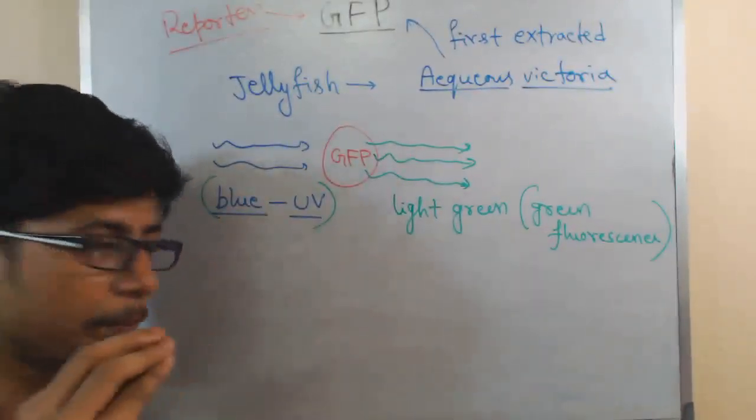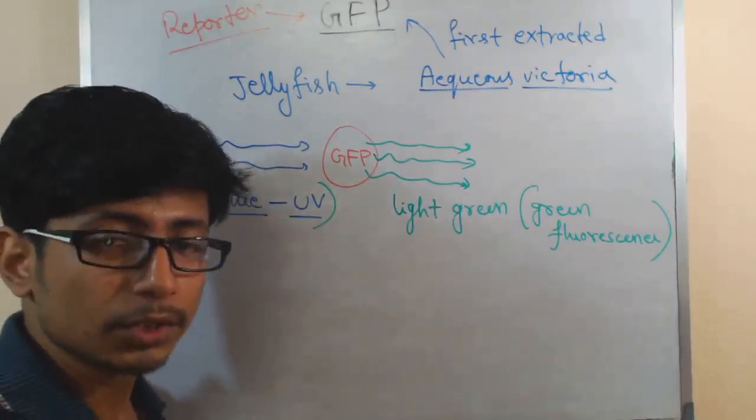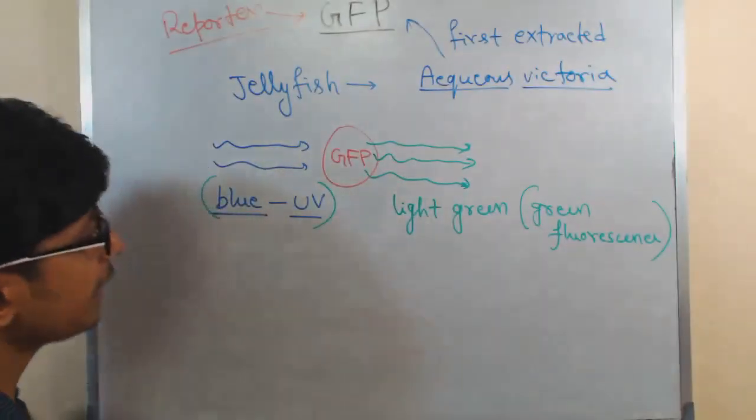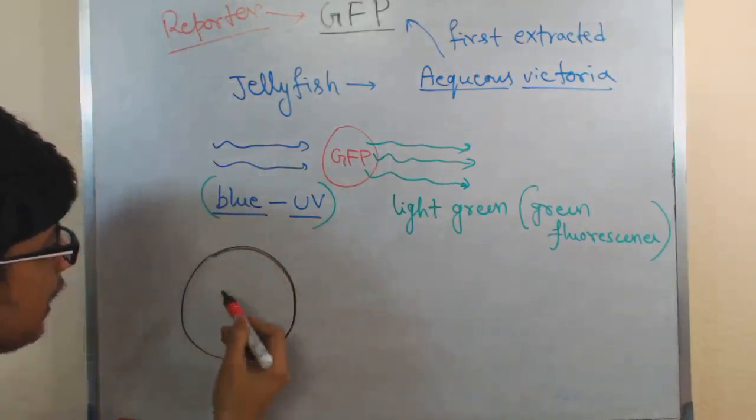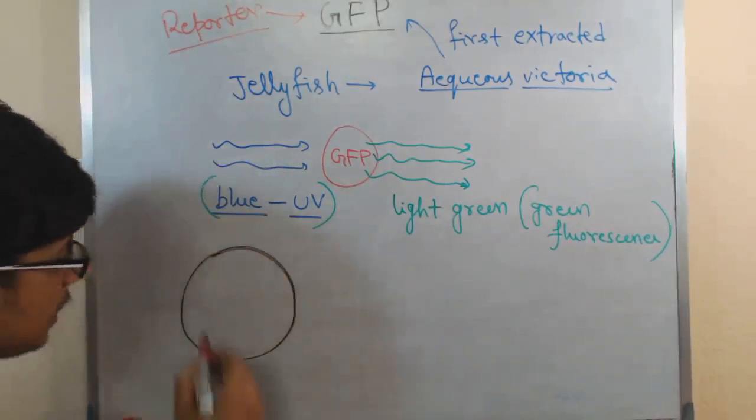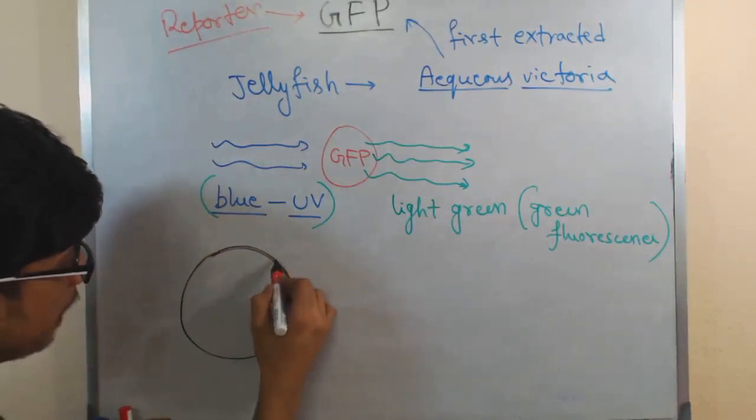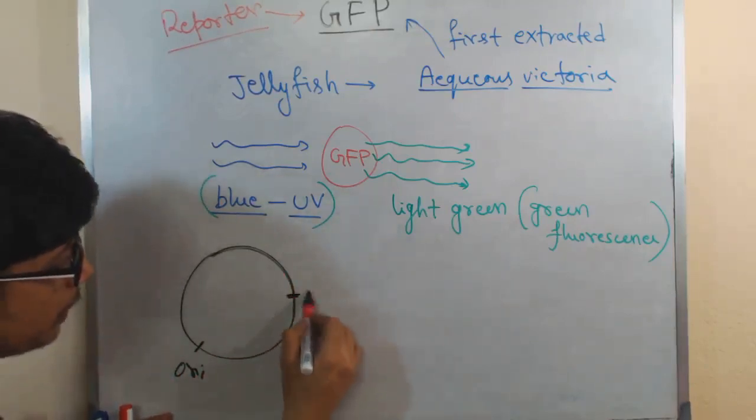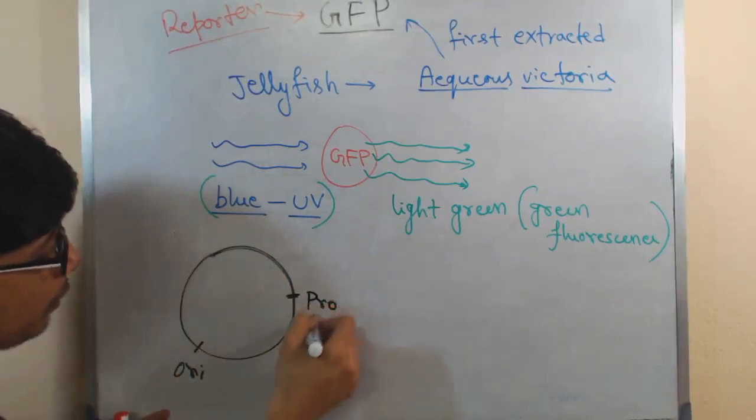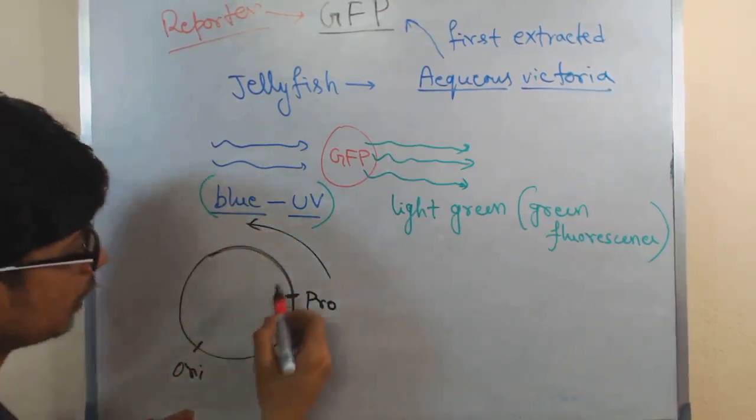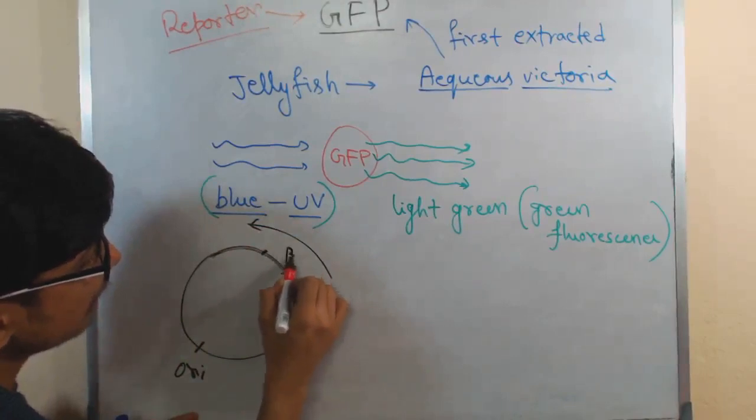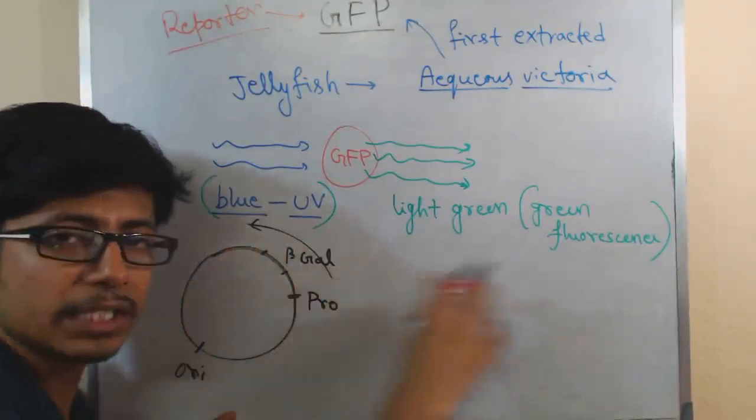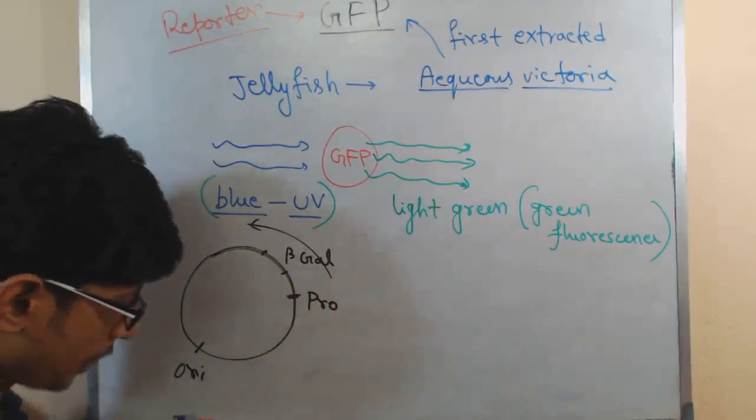Now, we can use this GFP protein or GFP gene. Let us say we are doing an experiment for checking the expression of a particular gene, and this is the plasmid we have. In this plasmid, we have an origin of replication here and we have a set of genes. We have the promoter over here and downstream of the promoter, we have our gene, let's say the beta galactosidase gene, beta gal gene. We want to see the expression of this gene. We want to insert this gene inside a bacteria and we want to see the expression.